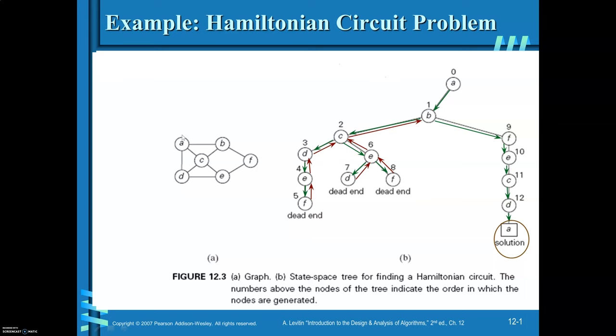We will see how to find the solution by constructing a state space tree. The circuit starts from A here, so the initial node is A. Then from A to B, then move to C, C to D, D to E, then F. So you get a path.